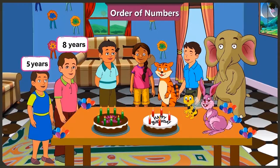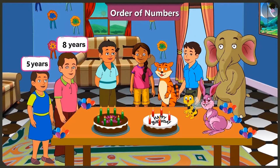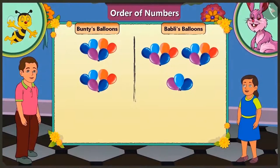Bubbly has a total of 5 candles. So how many candles would Bunty have? Bunty will have 3 more candles — that makes 6, 7, and 8. Bunty has a total of 8 candles on his cake. This shows that Bunty is 8 years old and Bubbly is 5 years old.